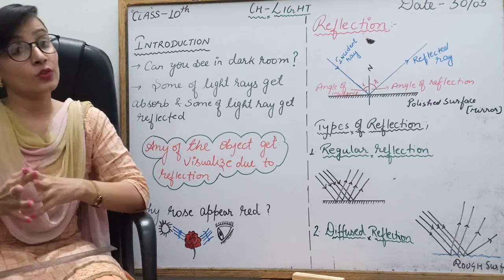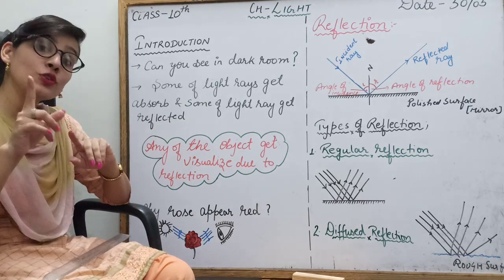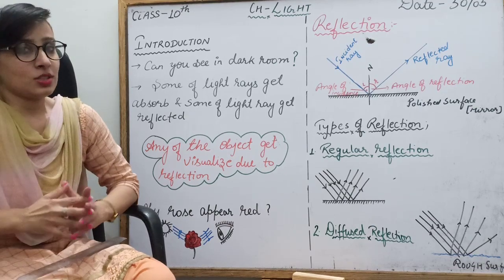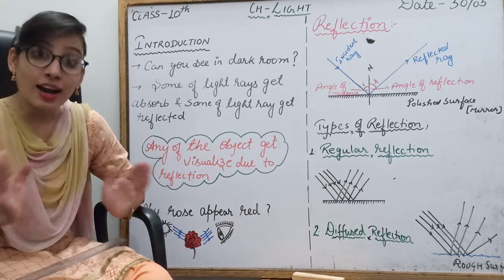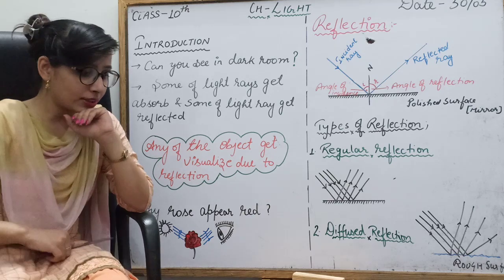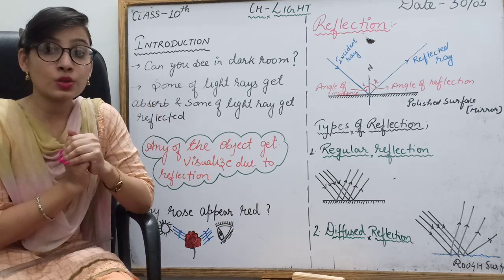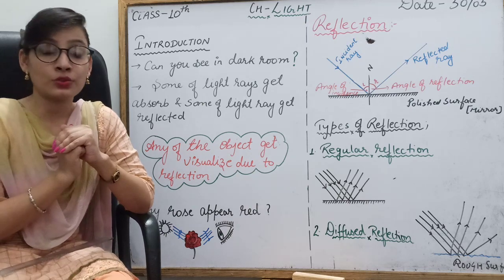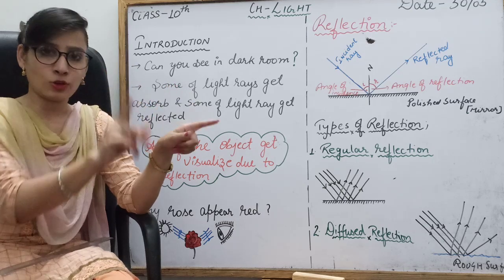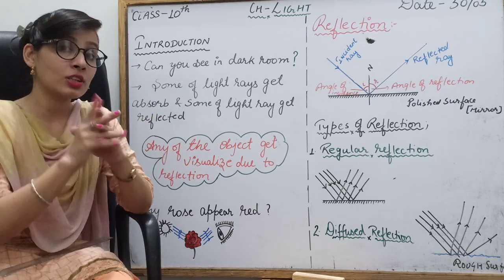So today we start with light. What is light? Before starting with light, let me give you a situation. You are in a dark room — imagine your own bedroom or guest room where there is no light coming in. That is a dark room. Let's use a common room — your classroom.